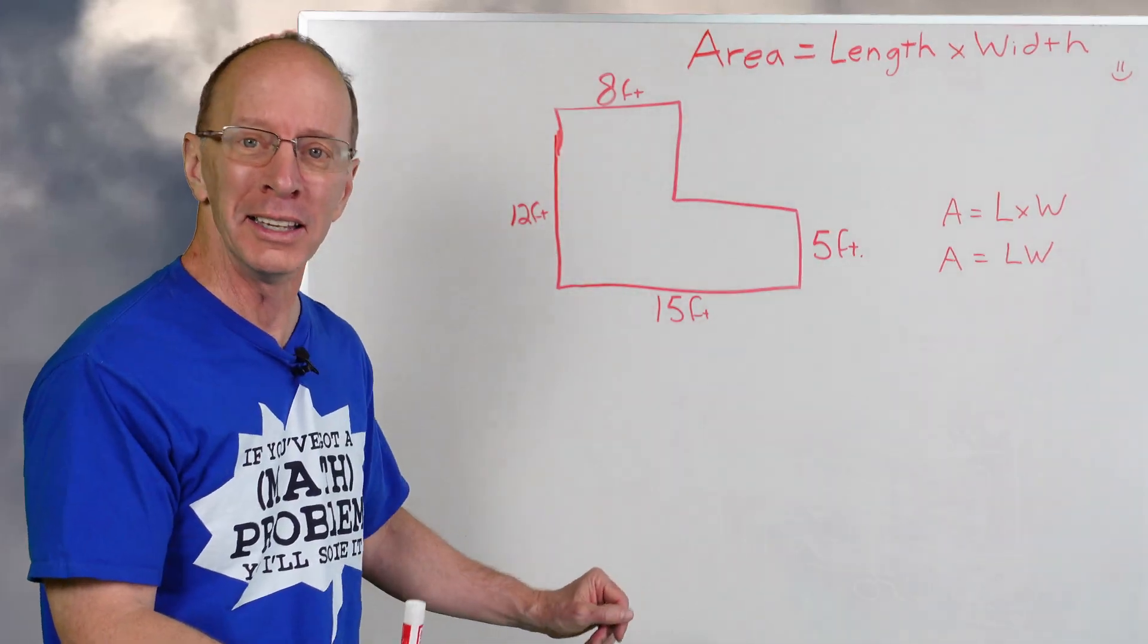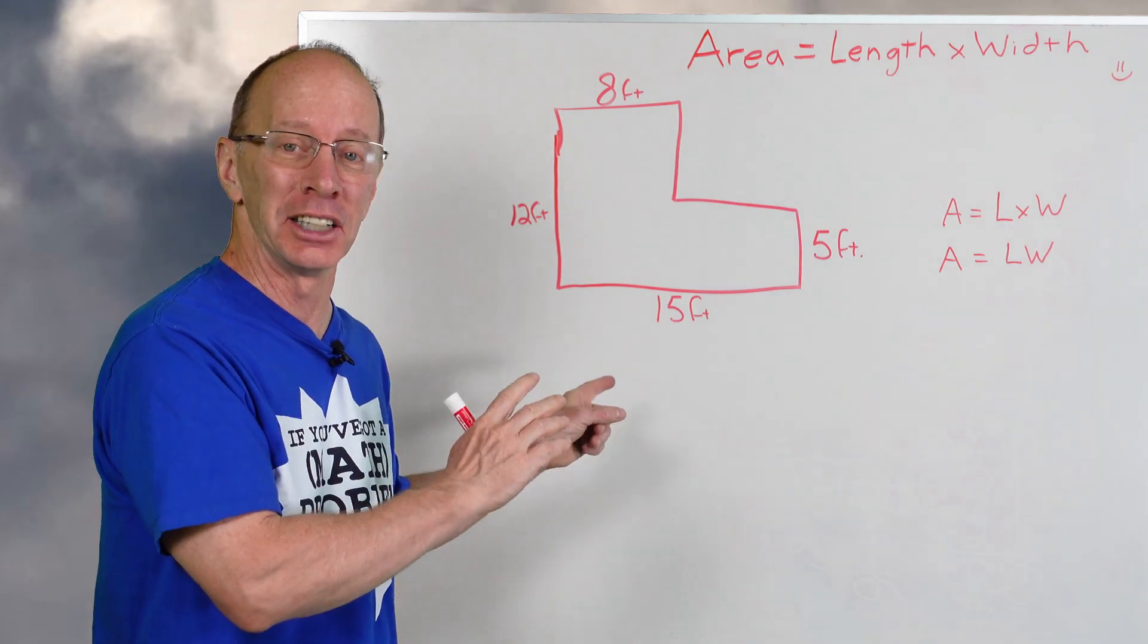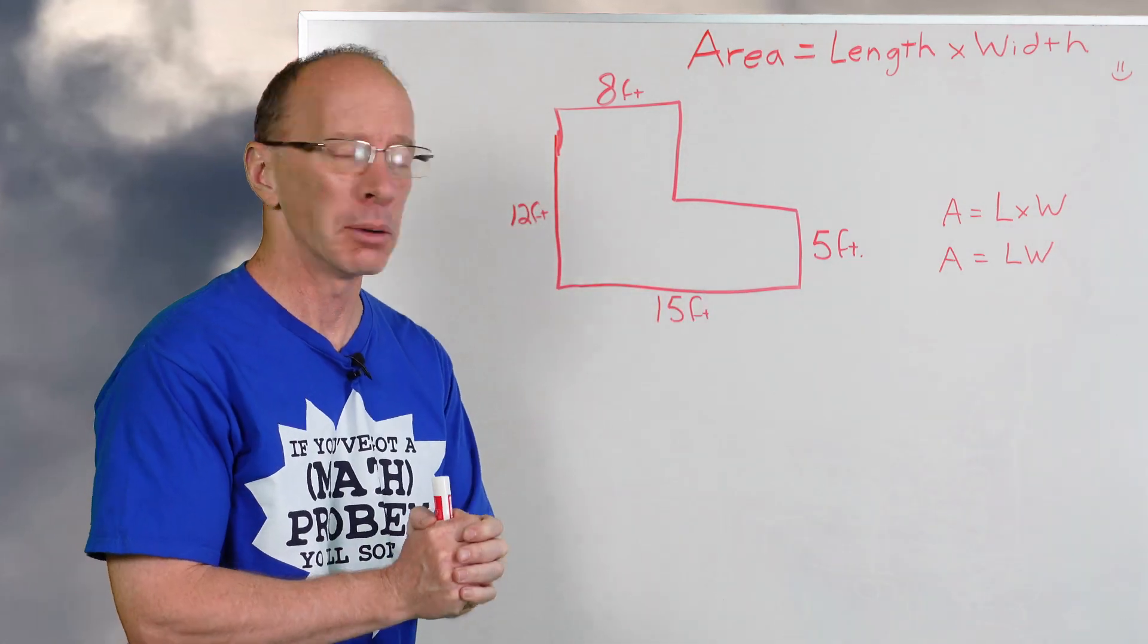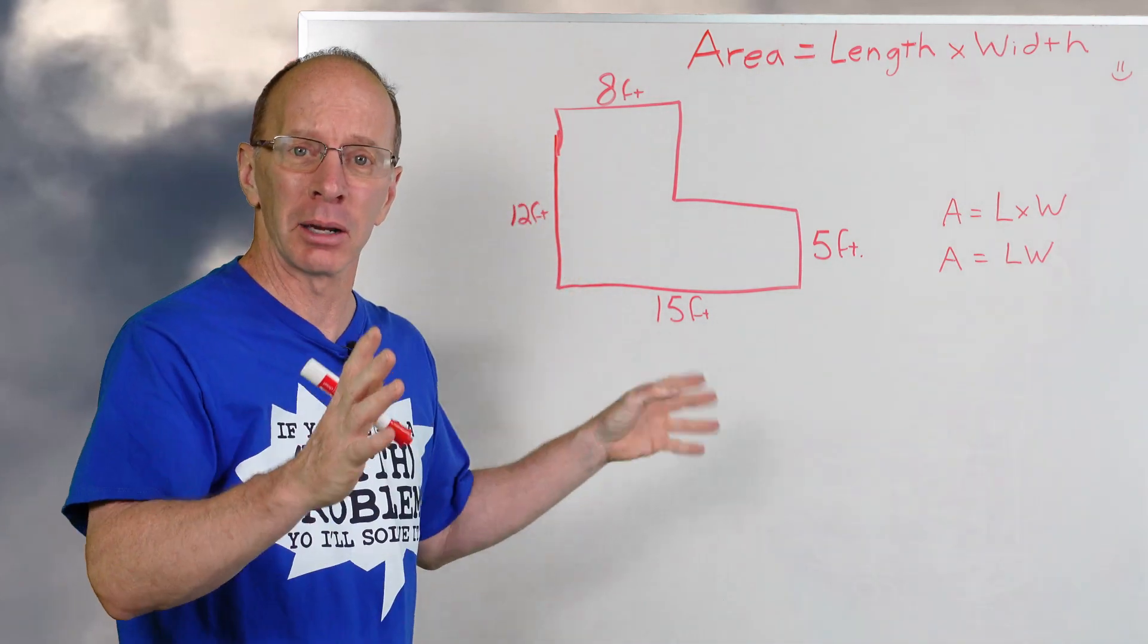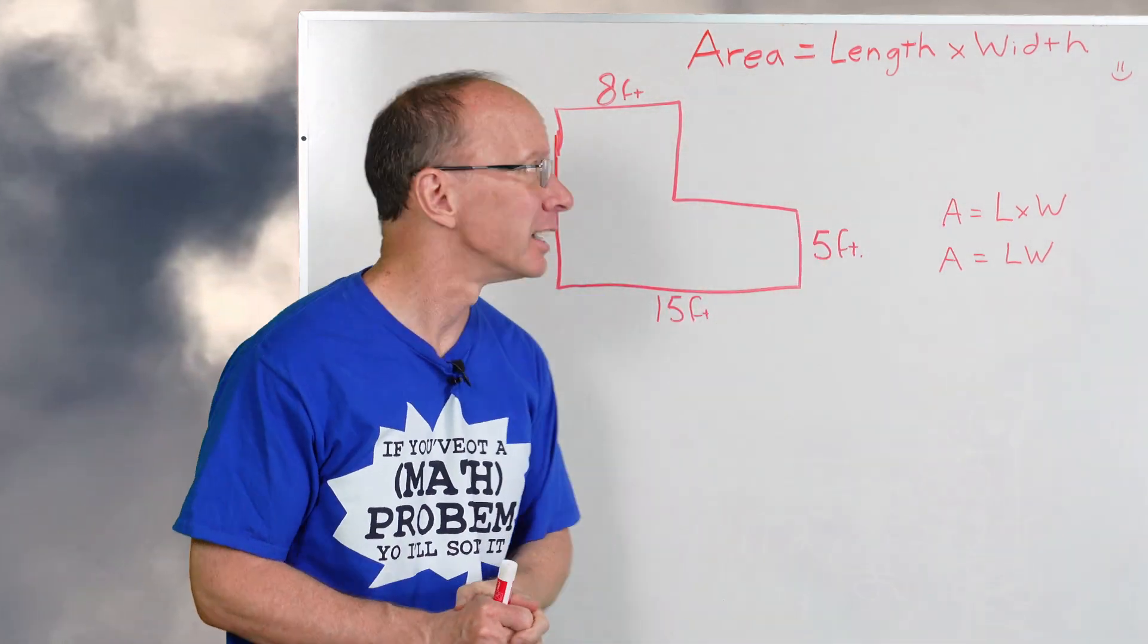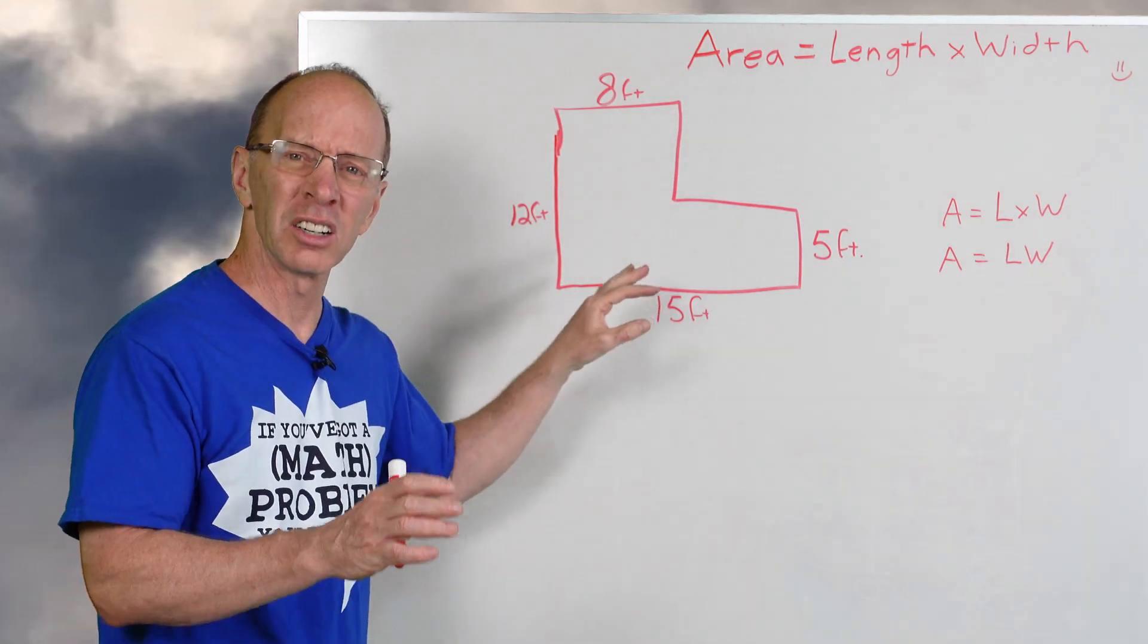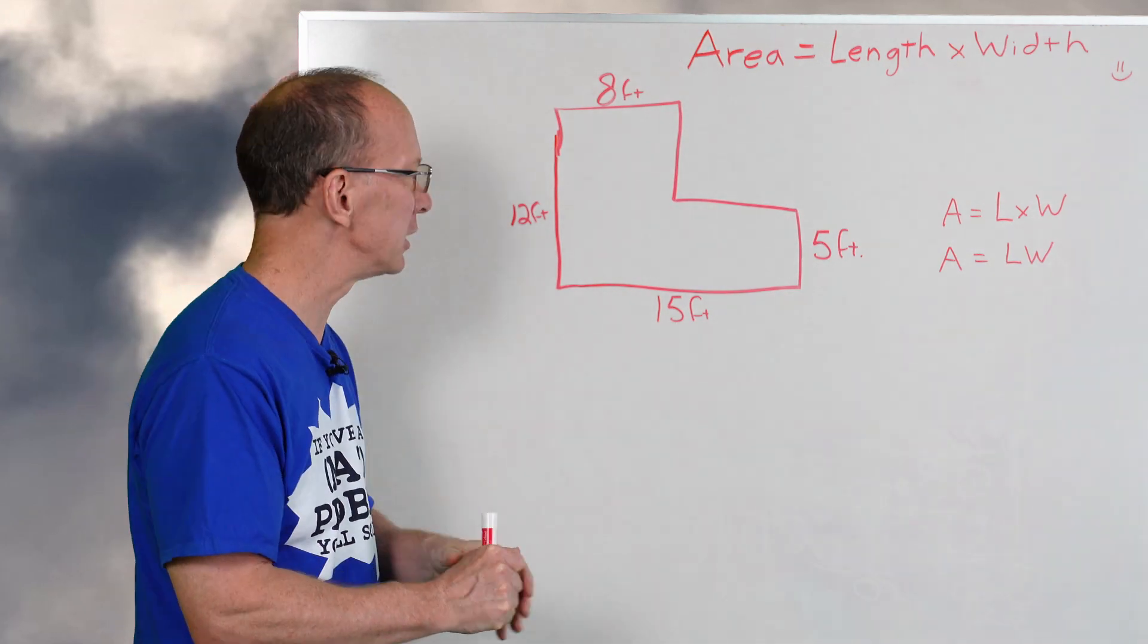Welcome back! This is a challenging one - there are even some sides that don't have numbers on them, and this is a different shape than I'm used to. Don't worry, we're still going to use the same formula: Area = Length × Width. We're just going to do a little changing in here. We're going to take it easy, so work with me.